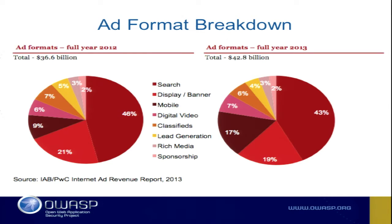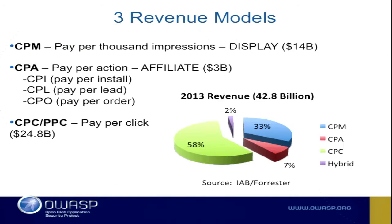Just as a highlight, what are the different types of ads in the ecosystem? Search definitely dominates — that's probably not a shocker. Display is probably the second largest and mobile is aggressively catching up. These stats are a couple of years old, but it shows the trend of the industry and how big it is.